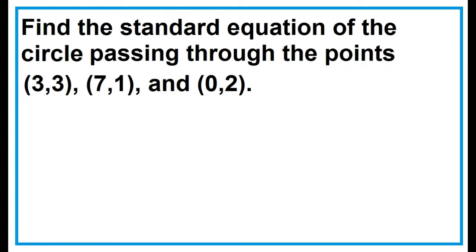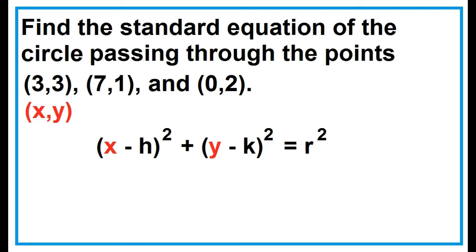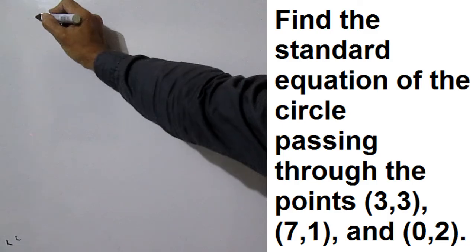Find the standard equation of the circle passing through the points (3, 3), (7, 1), and (0, 2). Note that the coordinates of the point correspond to the x and y values. Substitute these values to x and y in the equation of the circle in standard form.